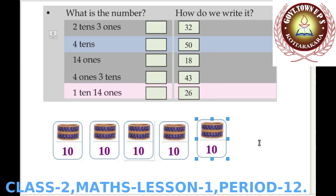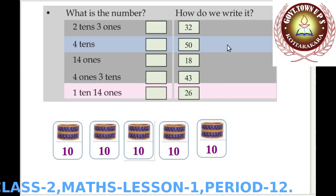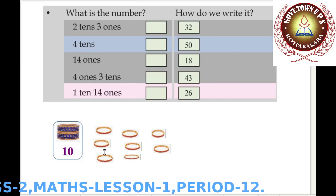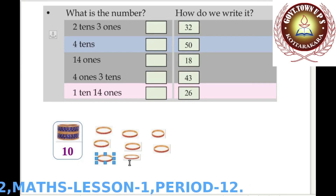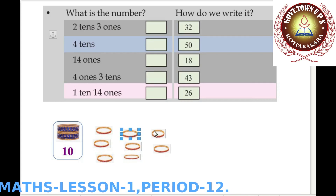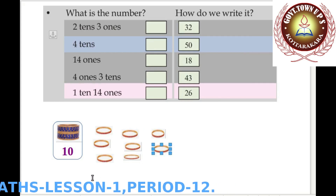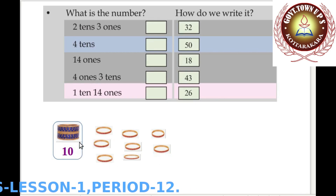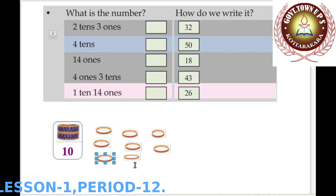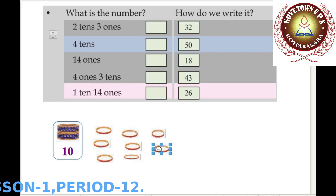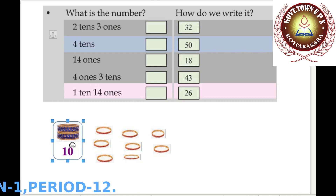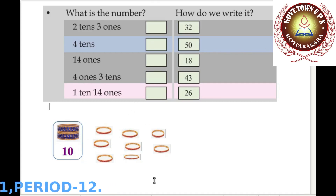Here: 1 ten and 8 ones — count the ones: 1, 2, 3, 4, 5, 6, 7, 8. Total: 10 plus 8 ones equals 18. We can write 18 as 1 ten and 8 ones.